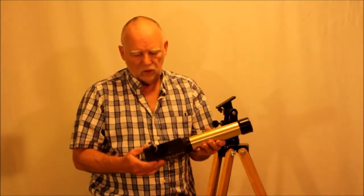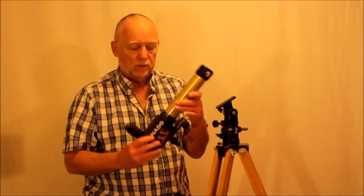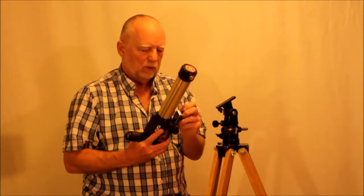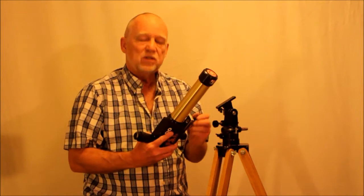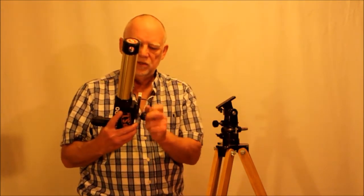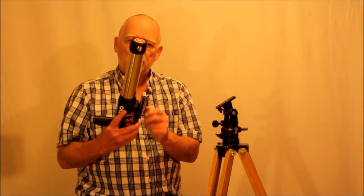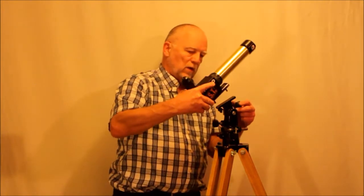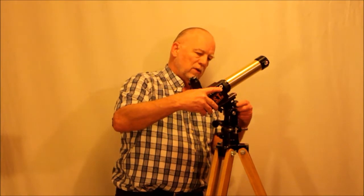So here is the Coronado Personal Solar Telescope, a nice little small telescope. This one is specifically designed to look at the sun. I built a little adapter here. It's a simple piece of aluminum, a little nuts. These could be wing nuts as well. Once you adapt this...